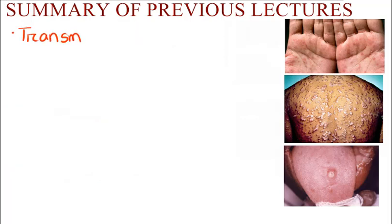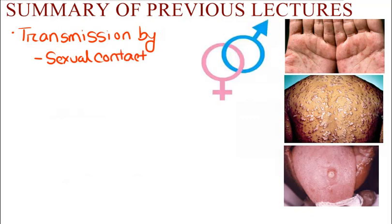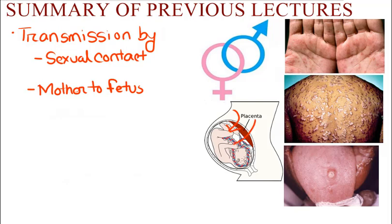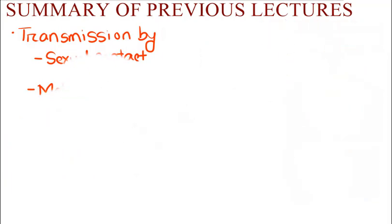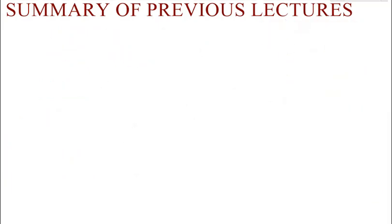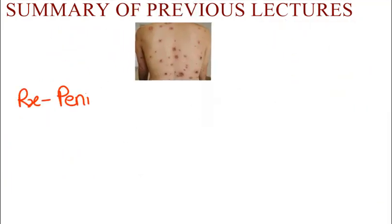Syphilis is transmitted primarily by sexual contact with an infected person. It can also transmit from an infected mother to baby through the placenta. Rarely it can spread through blood transmission. Syphilis is generally treated with penicillin.